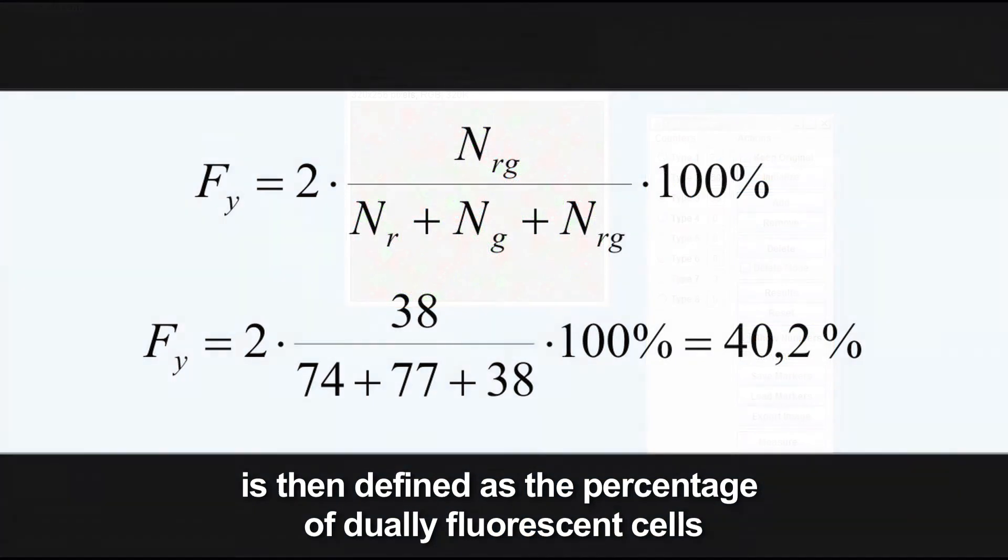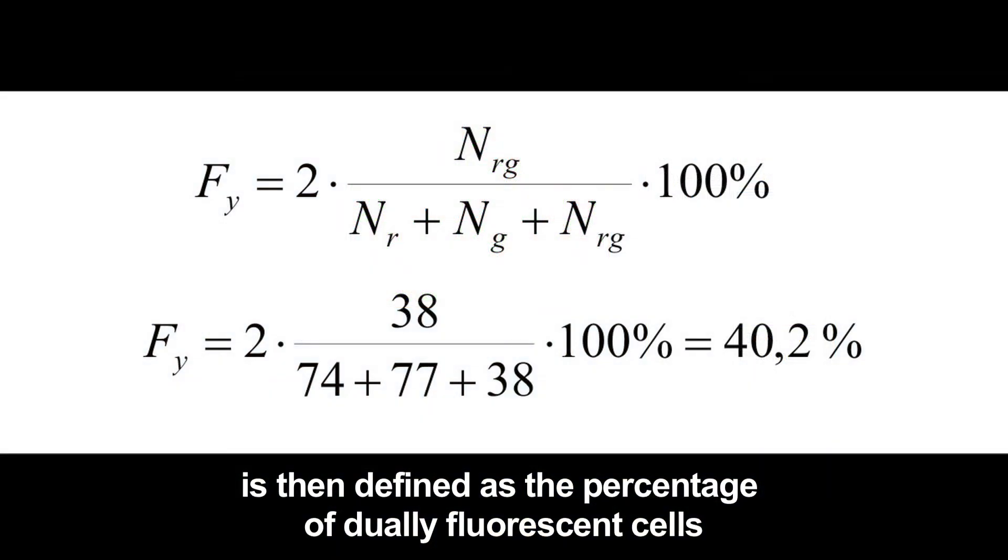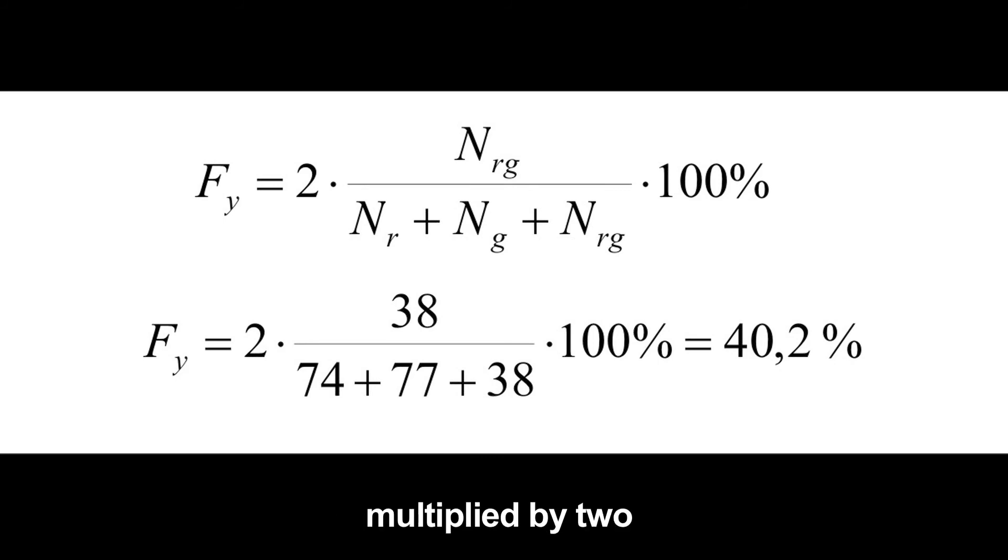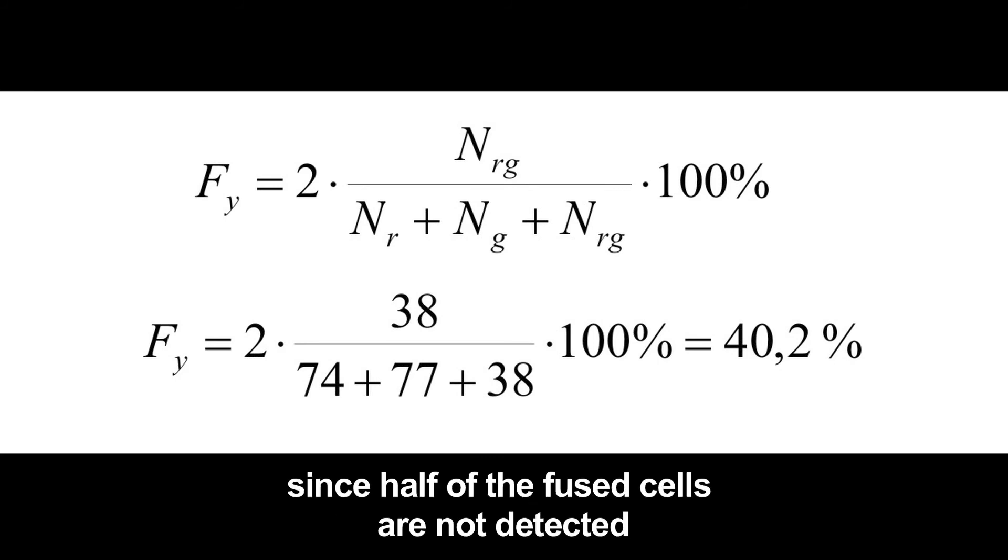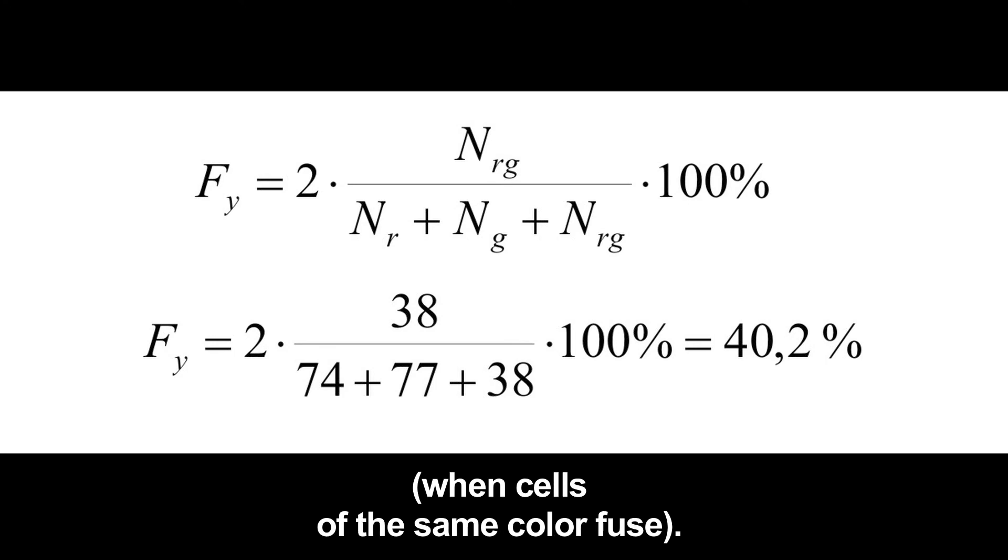Fusion yield is then defined as the percentage of dually fluorescent cells multiplied by two, since half of the fused cells are not detected when cells of the same colour fuse.